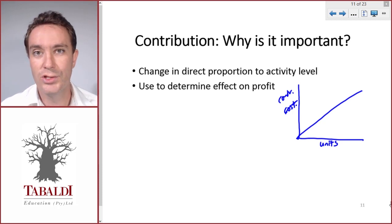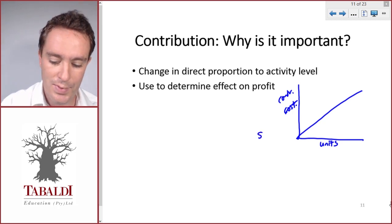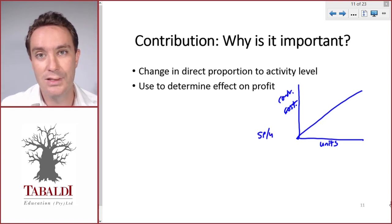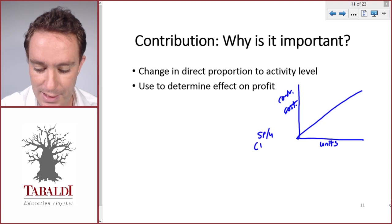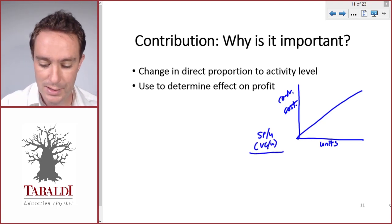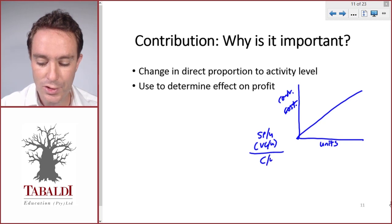If you think of contribution on a per unit basis, that would be our selling price per unit, which stays constant regardless of the number of units, less our variable cost per unit, which also stays constant on a per unit basis, giving us our contribution per unit.